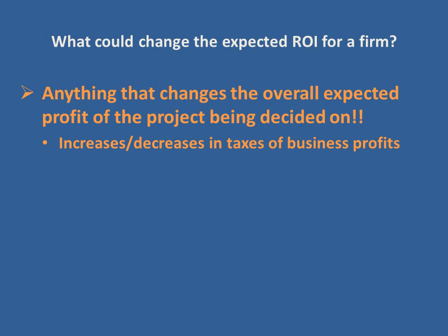The easy one to think of is if the government were to change taxes on business profits, because that's going to directly change the expected profit of this project. For example, if taxes on business profits are going to go up, the return on investment I was expecting is going to go down, and we'd see a leftward shift of the demand curve for loanable funds.